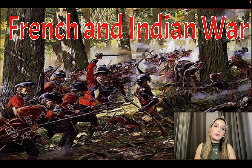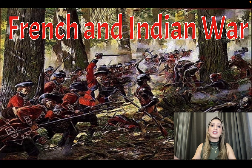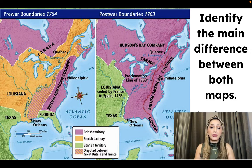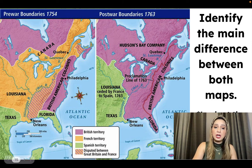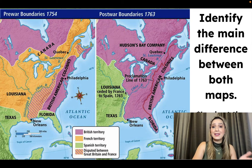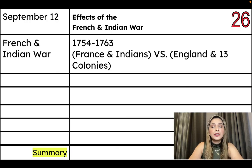So the French and Indian War was a war between France and Native Americans together versus the 13 colonies and England, who also had Native Americans on their side. So these Native Americans on both sides were actually enemies with each other. You'll notice a before and after map of North America. In 1754, the British colonies stretched to the Appalachian Mountains, versus after the war, the colonies stretched all the way to the Mississippi River. The French and Indian War was fought from 1754 to 1763 in the New World, which is North America.